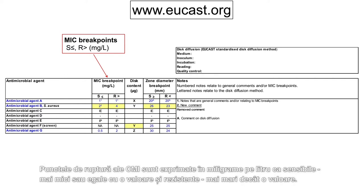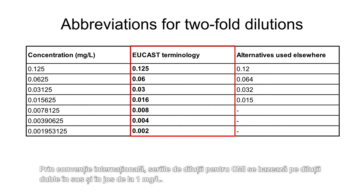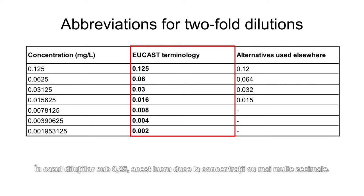MIC breakpoints are expressed in mg per litre as susceptible, less than or equal to a value, and resistant, greater than a value. By international convention, MIC dilution series are based on two-fold dilutions up and down from 1 mg per litre. At dilutions below 0.25, this leads to concentrations with multiple decimal places.